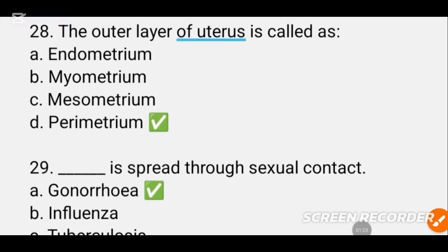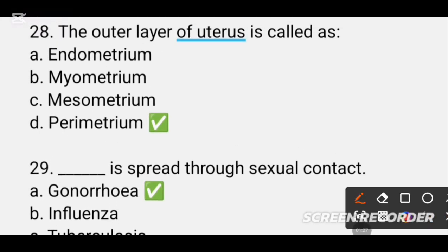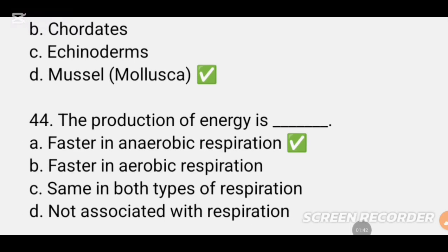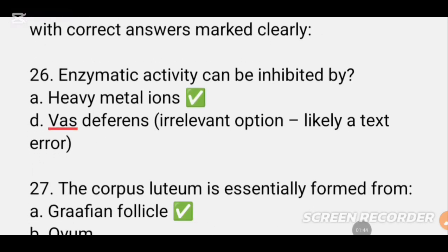Question number 28. The outer layer of the uterus is called DASH. The uterus from the outside layer is the perimetrium. Moving to the middle area we call the myometrium. Then we move to question number 29.